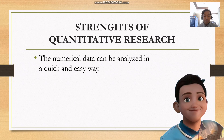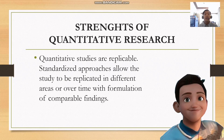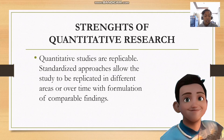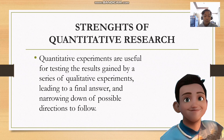Numerical data can also be analyzed in a quick and easy way. By employing statistically valid random models, findings can be generalized to the population about which information is necessary. Lastly, quantitative studies are replicable. Standardized approaches allow the study to be replicated in different areas or over time with comparable findings — all you have to do is adopt the study and change the respondents and/or variables. Quantitative experiments are also useful for testing results gained by qualitative experiments, leading to a final answer and narrowing down possible directions to follow.